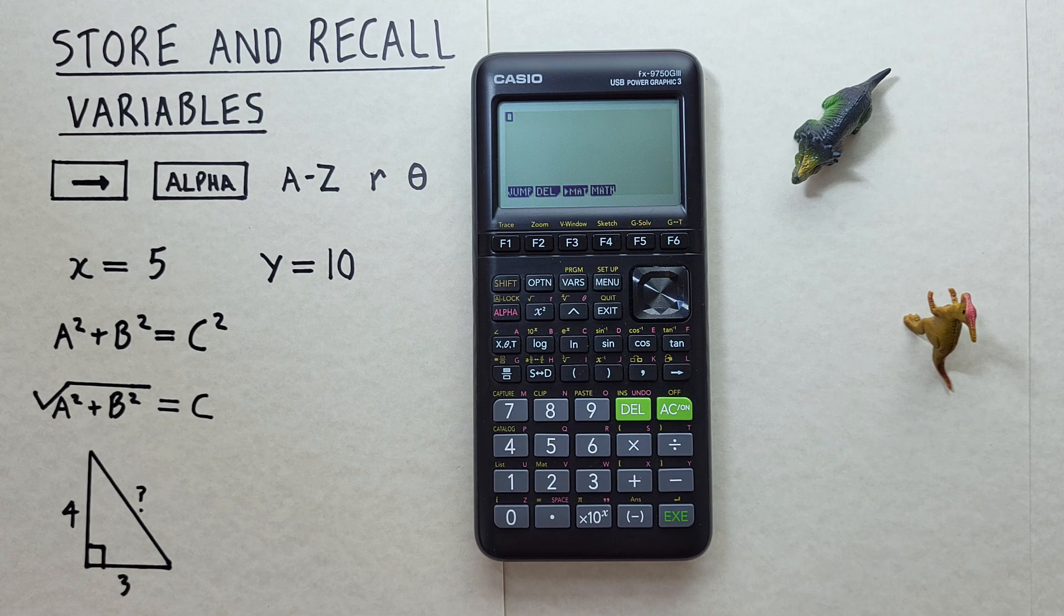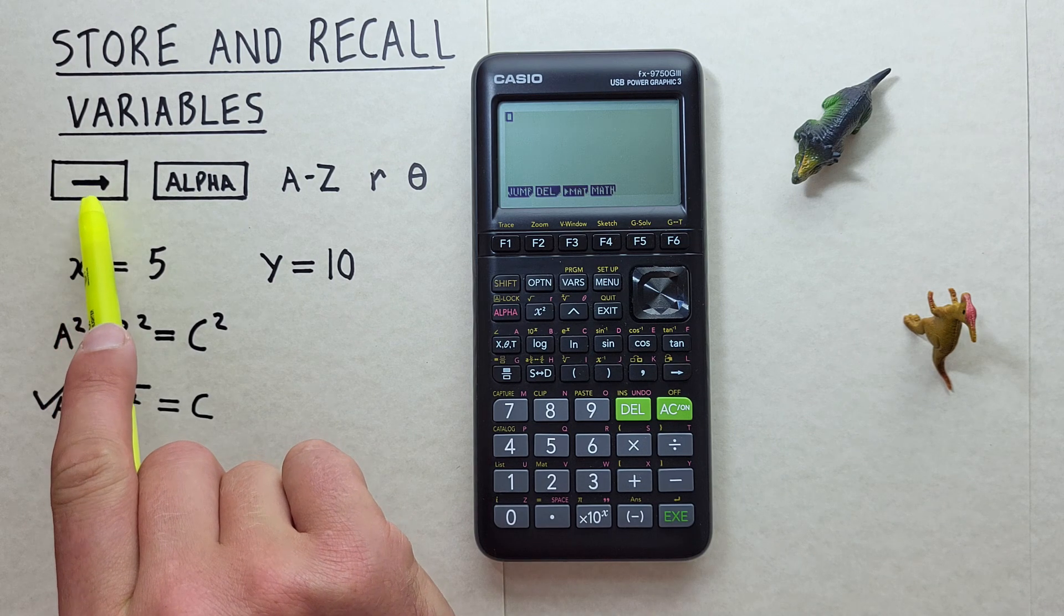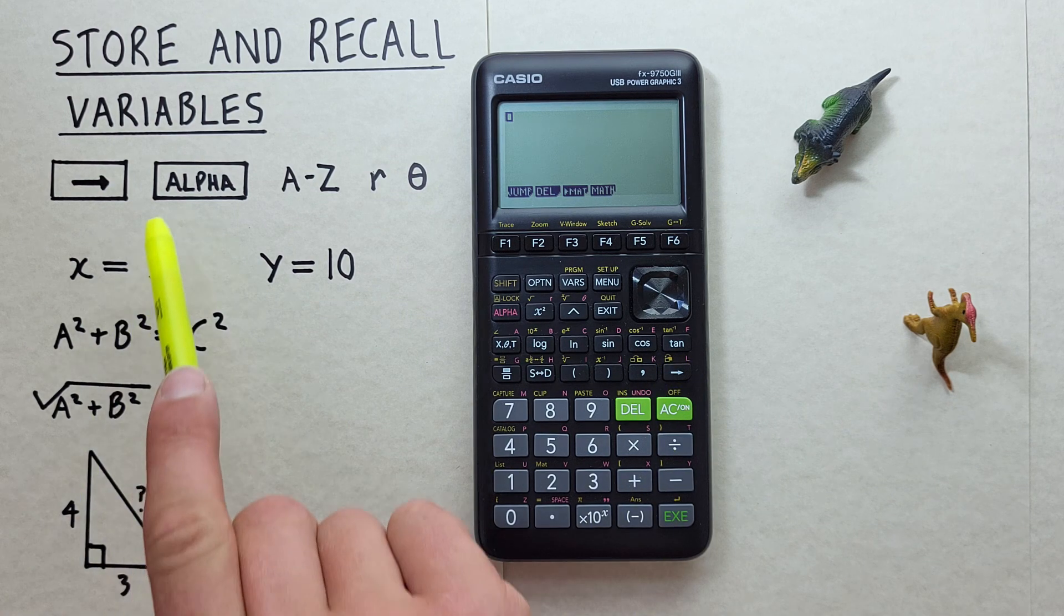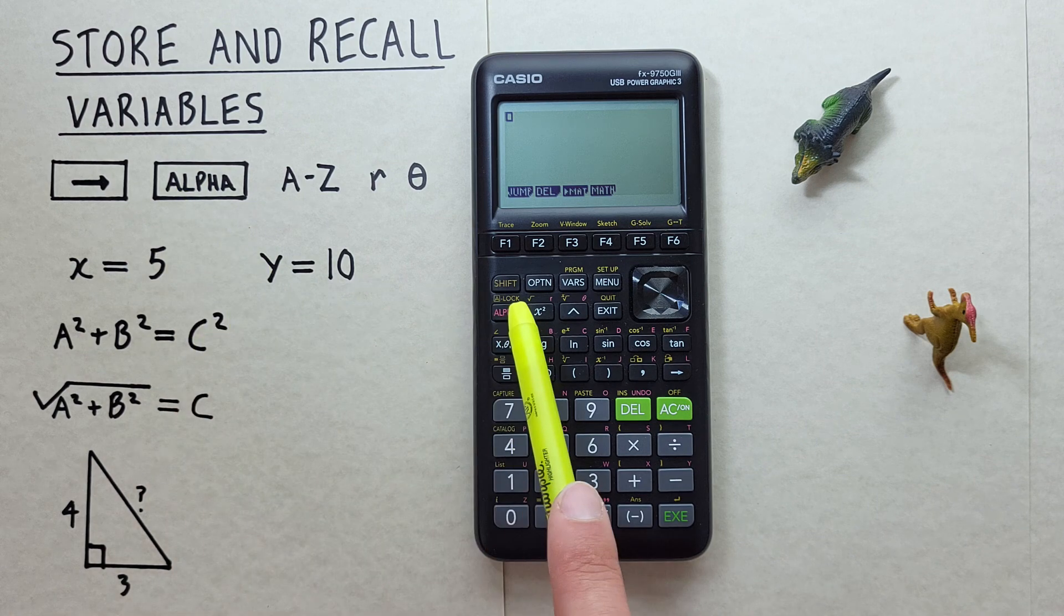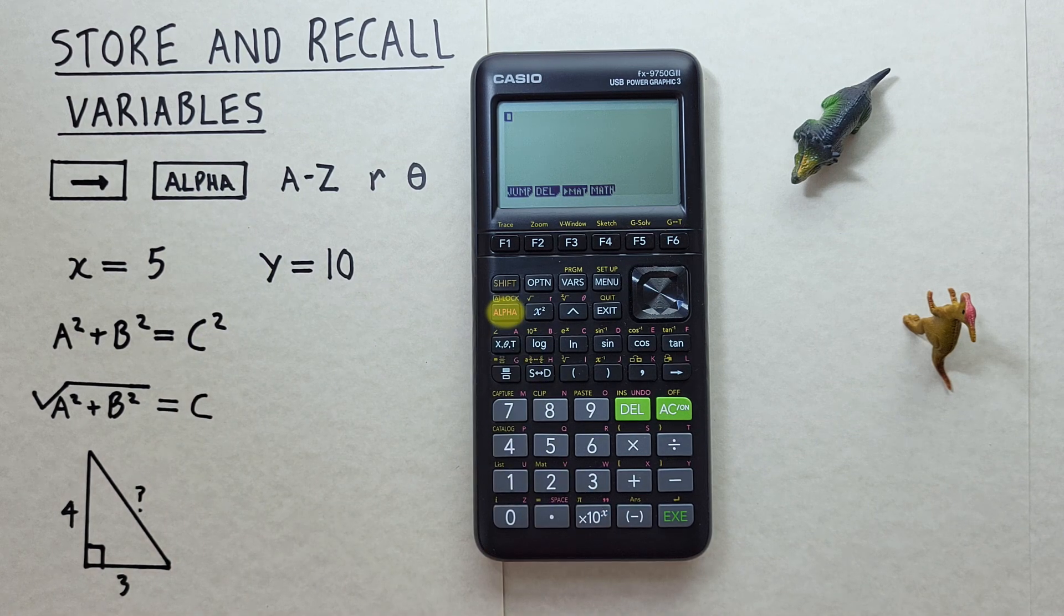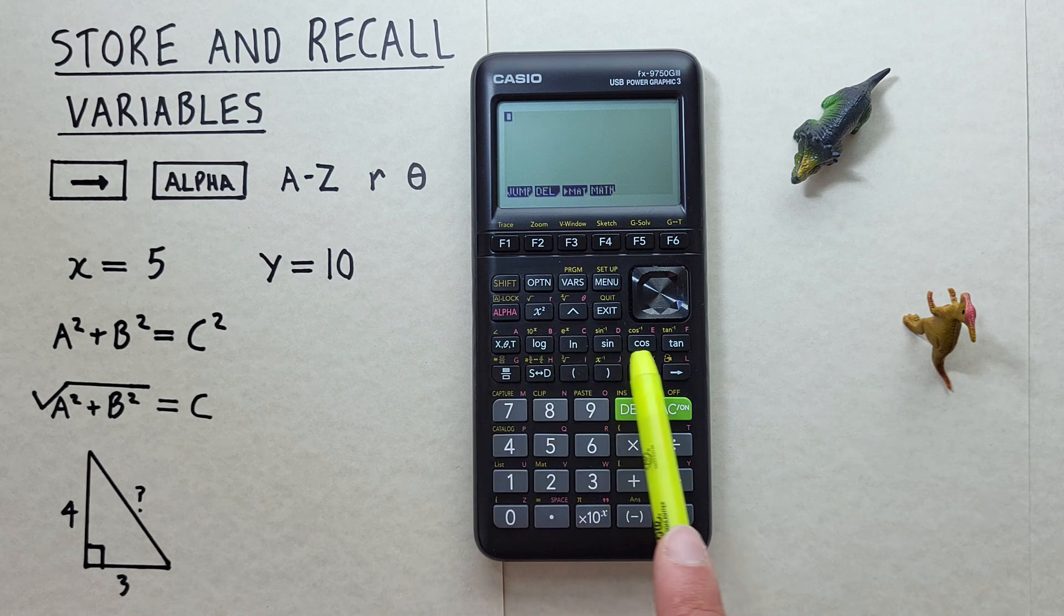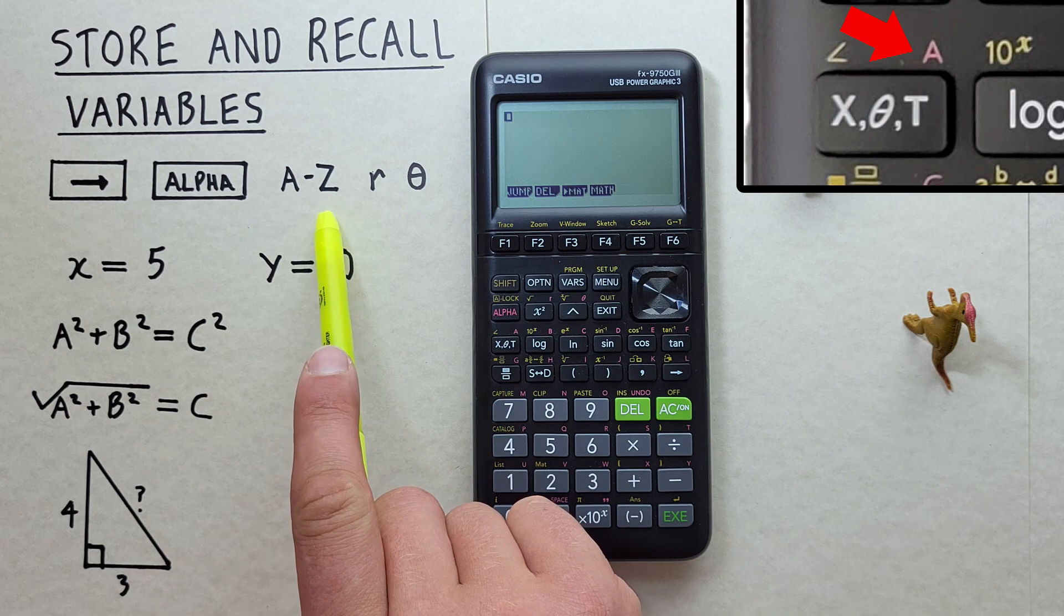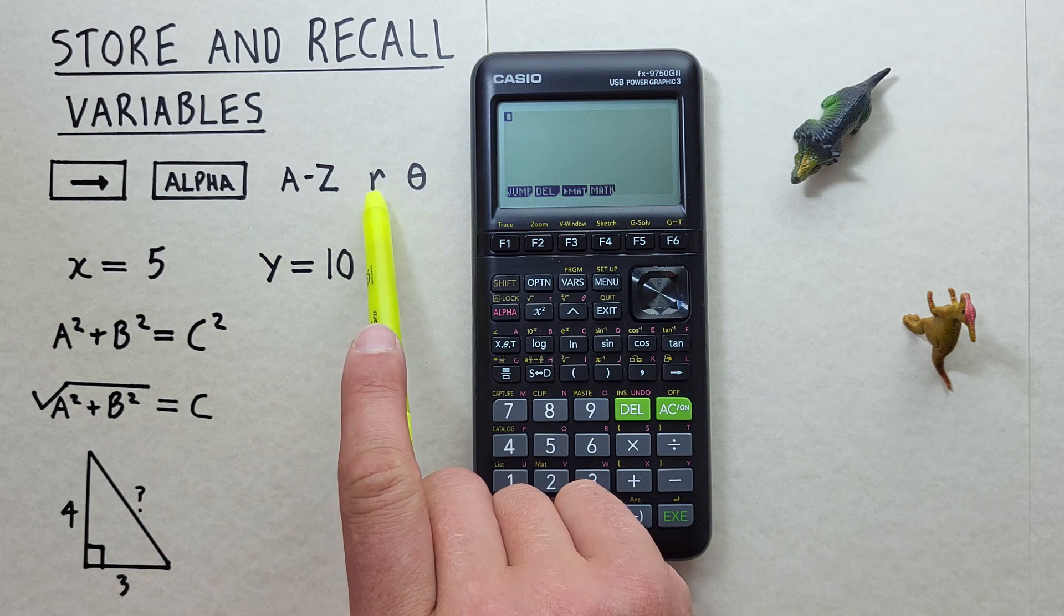To do that, we'll use the arrow key that looks like this, located here, the alpha key that looks like this, located here, and the alpha memory slots indicated in red at the top right of the keys, A through Z, as well as the small r and theta.